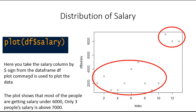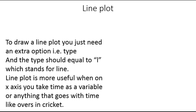The plot shows that most of the people are getting salaries under 6000. Only three people are getting higher salaries and they are above 7000. Now if you are going to draw a line plot instead of that scatter plot, then you add another additional argument type equal to L, enclosed in quotation marks. This L stands for line.